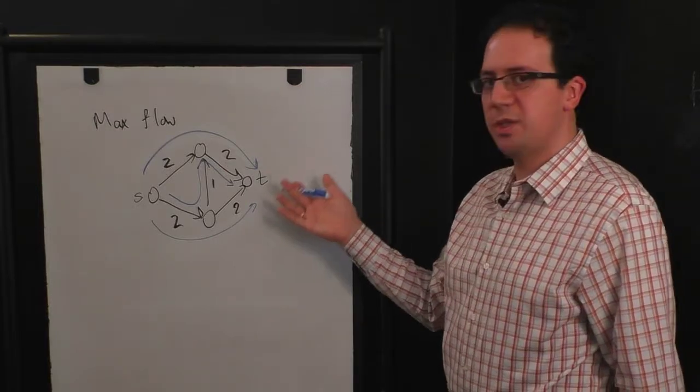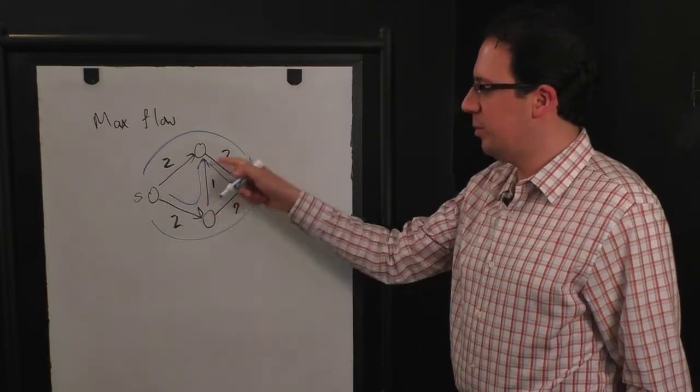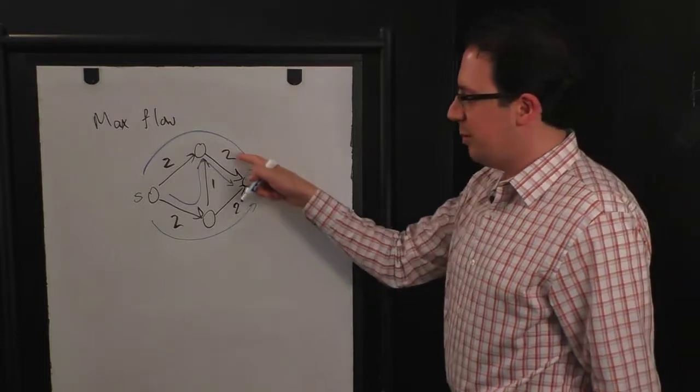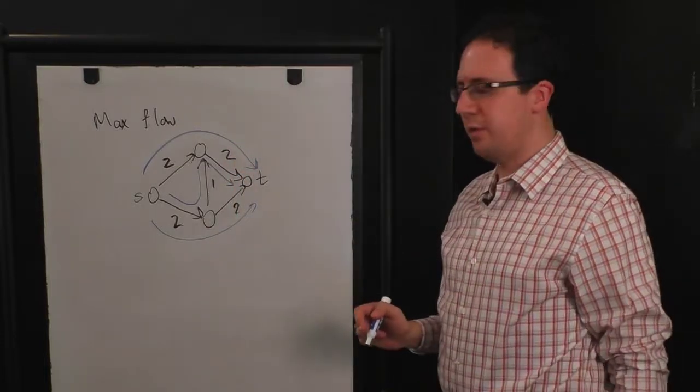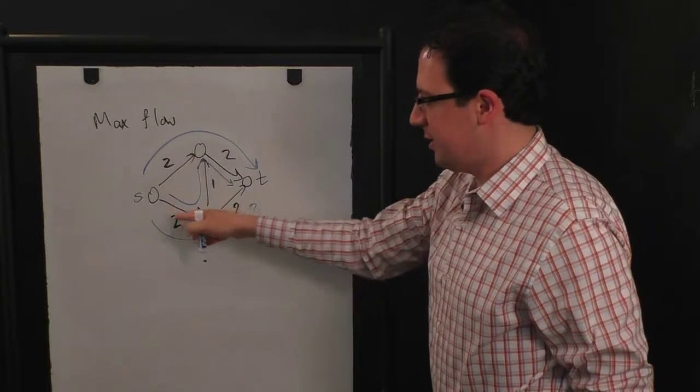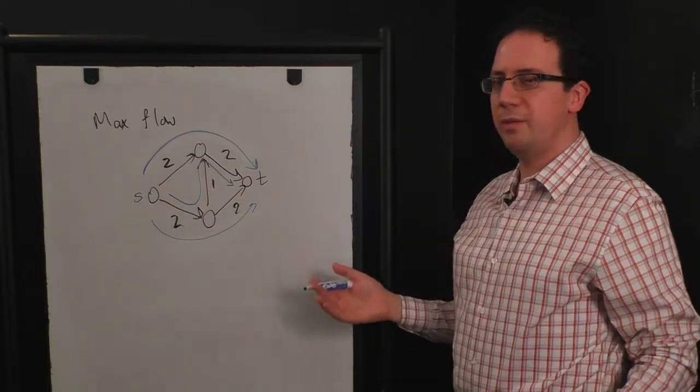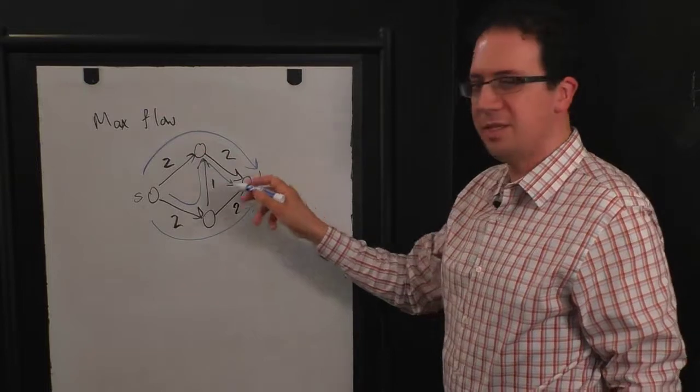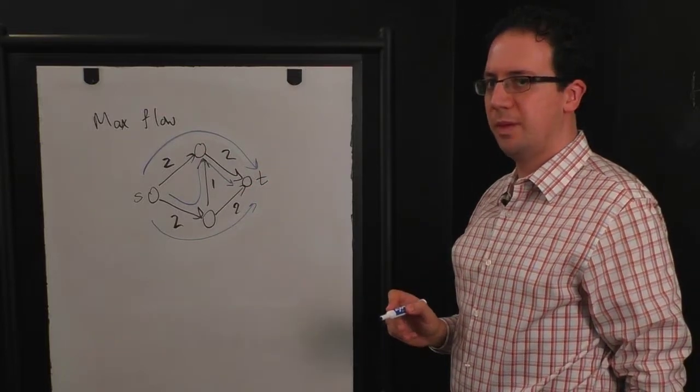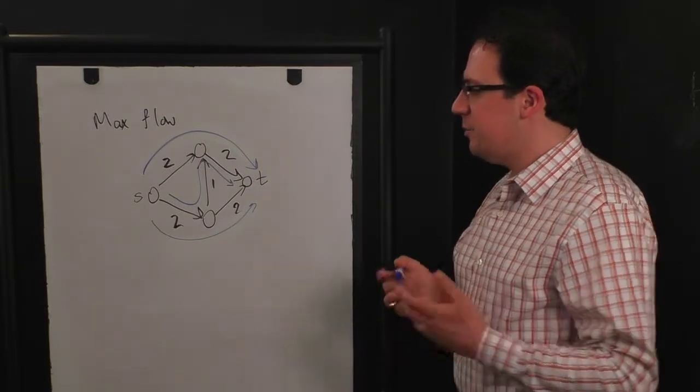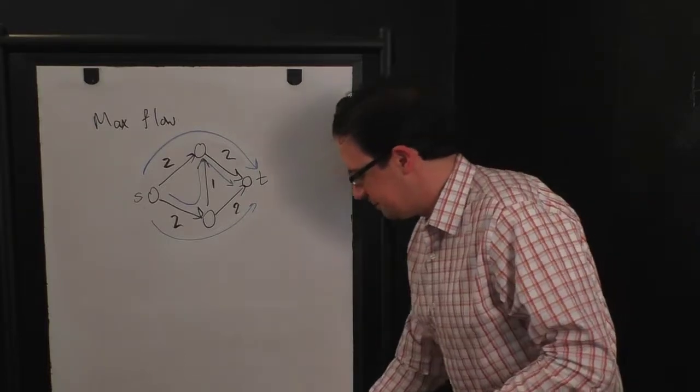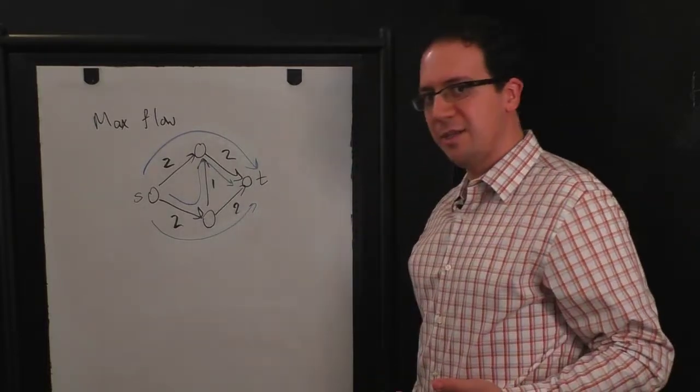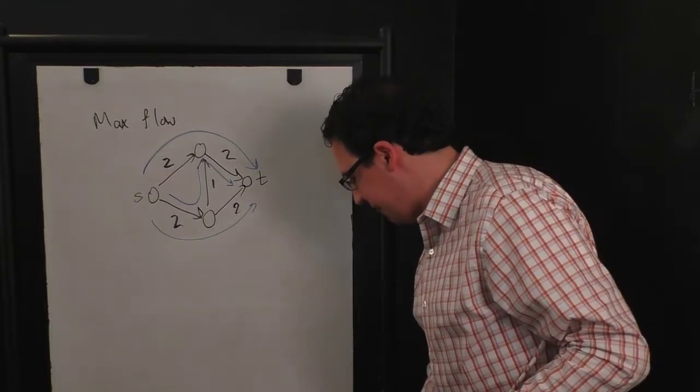Now the issue is we're stuck in a local optimum. We've got three units of flow, but this edge now already has two units of flow on it, and this edge already has two units of flow on it. So there are no more paths from s to t that have any excess flow. So let's see what this looks like. Let's see what the landscape here actually looks like, to see why we got stuck in this local optimum and how we might get out of it.